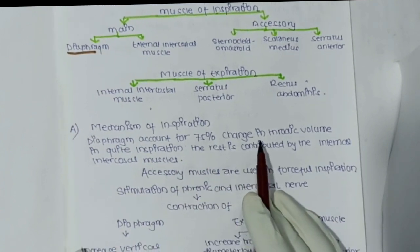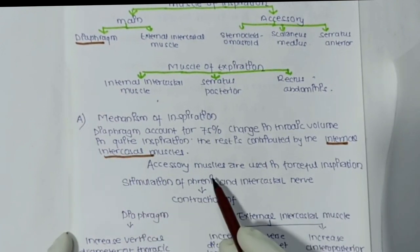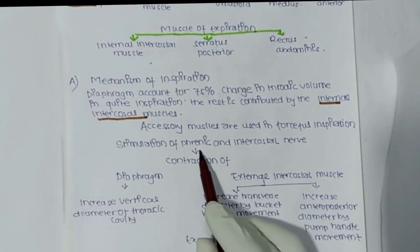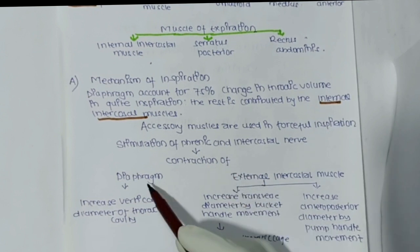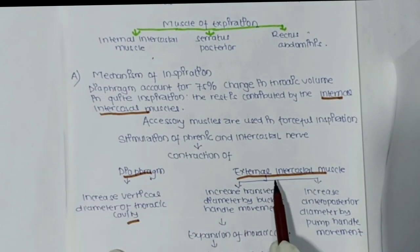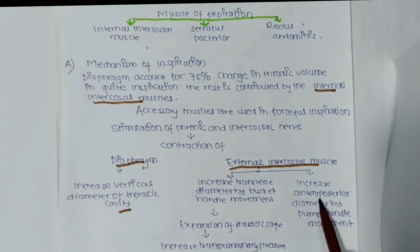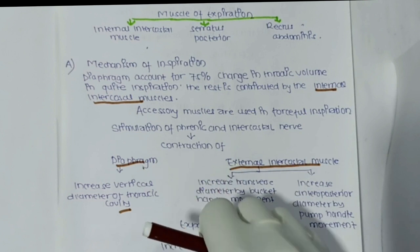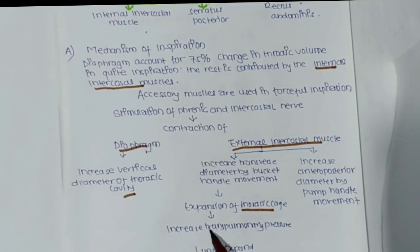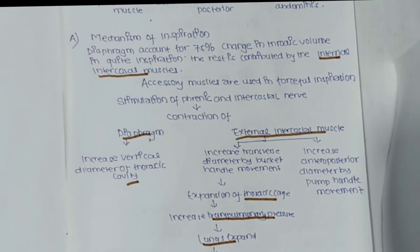In the mechanism of inspiration, the diaphragm contributes 75% of the change in thoracic volume during quiet inspiration; the rest is contributed by the external intercostal muscles. Accessory muscles are used in forceful respiration. Stimulation of the phrenic and intercostal nerves contracts the diaphragm and external intercostal muscles. The diaphragm increases the vertical diameter of the thoracic cavity, while external intercostal muscles increase the transverse diameter by bucket-handle movement and increase the anterior-posterior diameter by pump-handle movement. This expansion of the thoracic cage increases trans-pulmonary pressure, causing the lungs to expand and air to move inside.